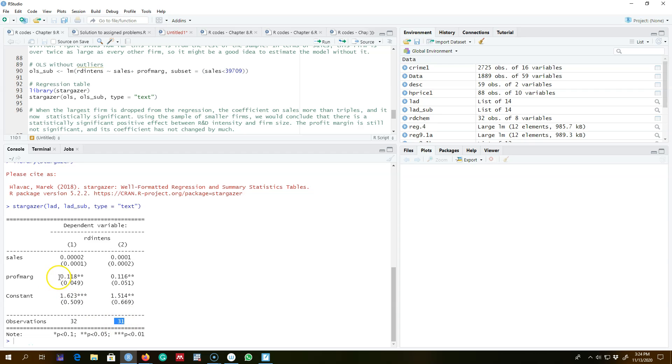Similarly, this profit margin variable, its coefficient value and statistical significance is not much different across these two sets of observations. So we can conclude that LAD, or least absolute deviation method, is a little bit more resilient to outliers as compared with the OLS.